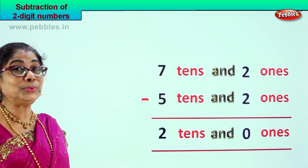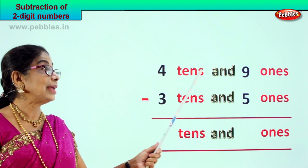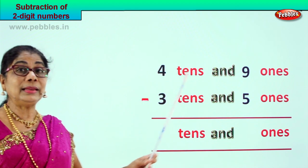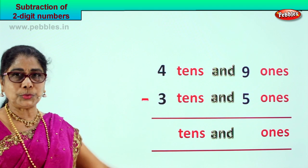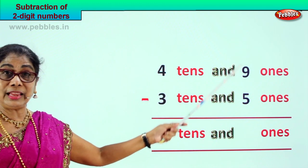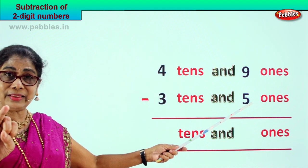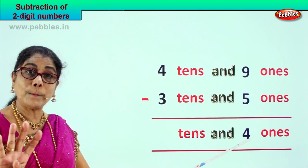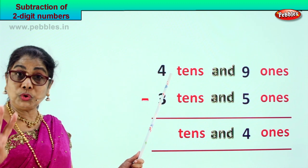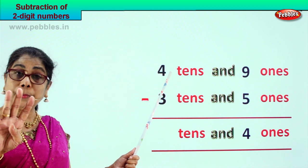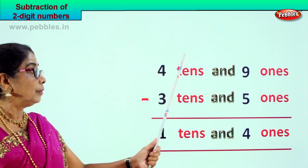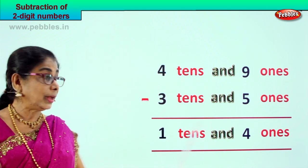Good, let's take another new sum. 4 tens and 9 ones minus 3 tens and 5 ones. What is 49 take away 35? Let's go to the ones — 9 ones minus 5 ones, 9 take away 5. Count from 5: 6, 7, 8, 9 — 9 take away 5 is 4. 9 ones take away 5 ones is 4 ones. Now here you have 4 tens minus 3 tens — 4 take away 3, you get 1 ten. Your answer is 14.